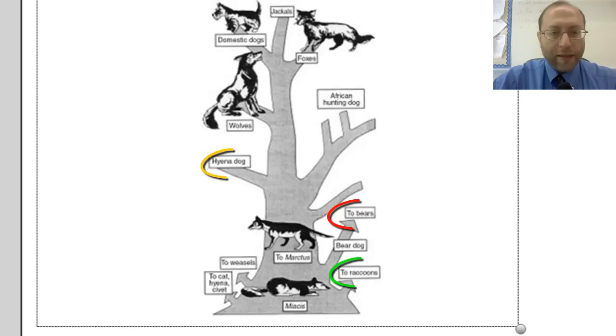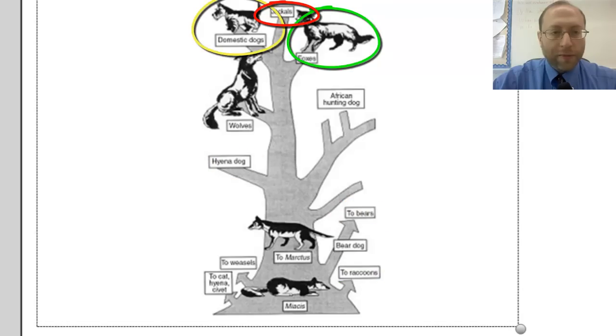Bears, raccoons, and hyena dogs: bears are there, raccoons are there, and hyena dogs are up there, so those are pretty far away. Jackals, foxes, and domestic dogs: you see how those all come together pretty close to each other. It seems like they all branch out from the same point. So those are closer than all the others together.